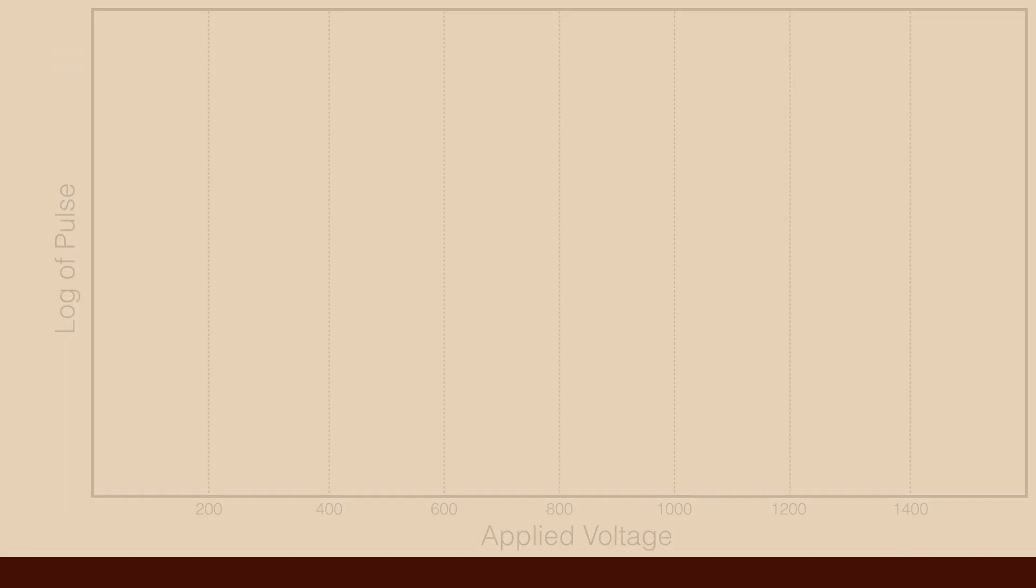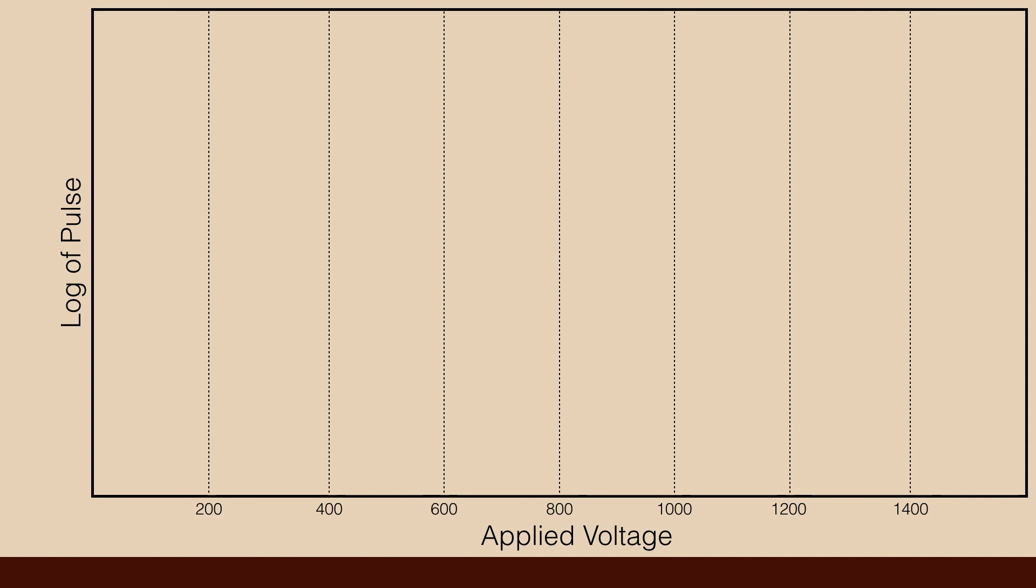Principle: The working range of the potential in GM counter is such that all types of ionizing radiations of different energy produce current pulse of the same magnitude. The device working in the potential range of 100 to 200 volts is known as ionization chamber.